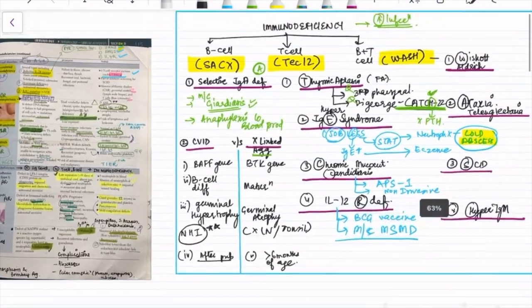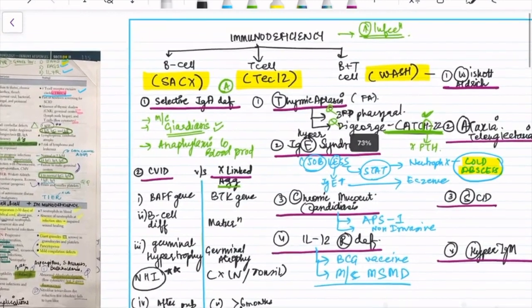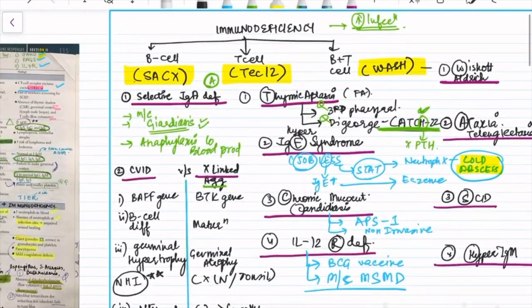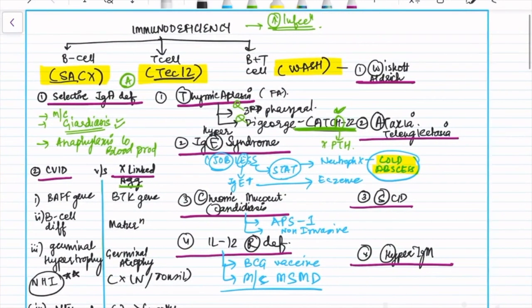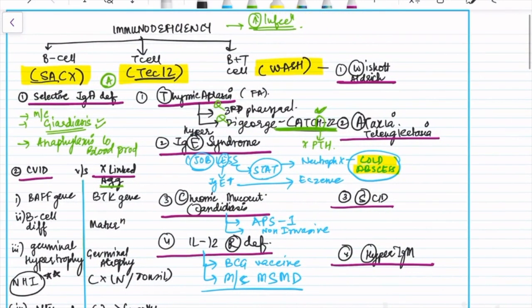This roughly sums up B cell and T cell disorders. In the next video we'll be discussing the disorders of combined B and T cell, which are also very important.